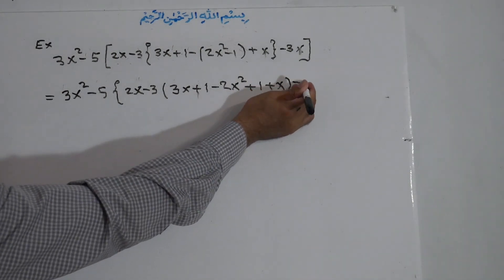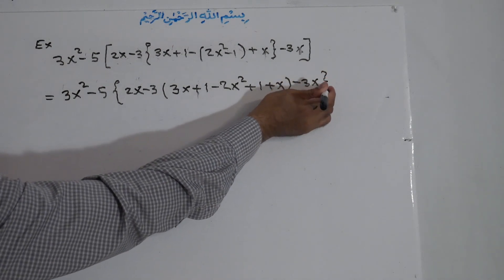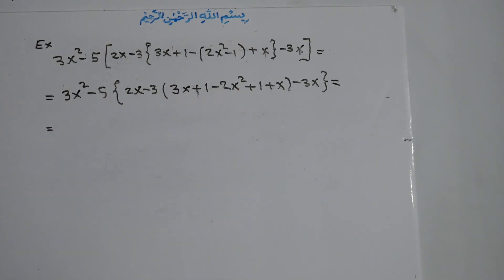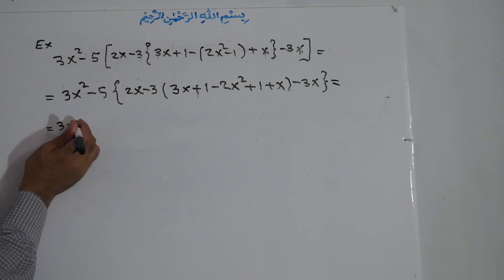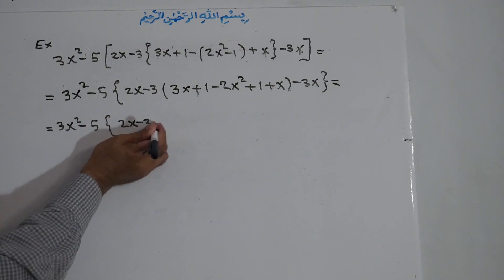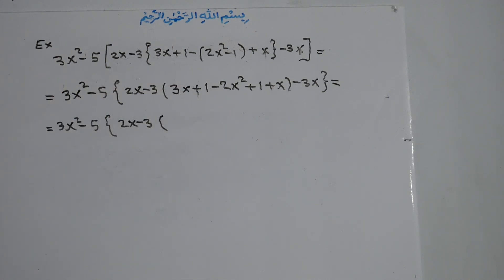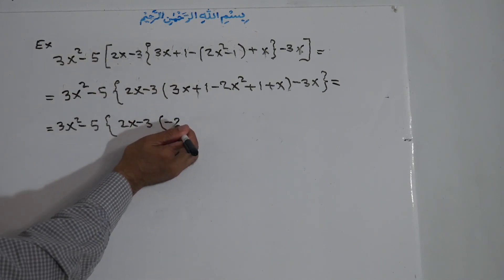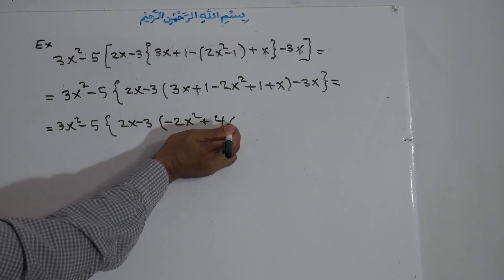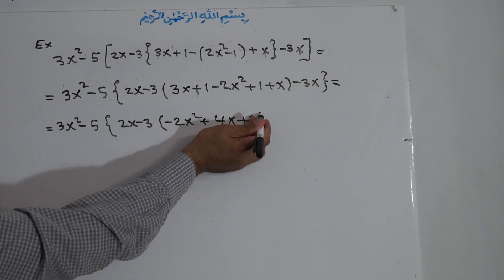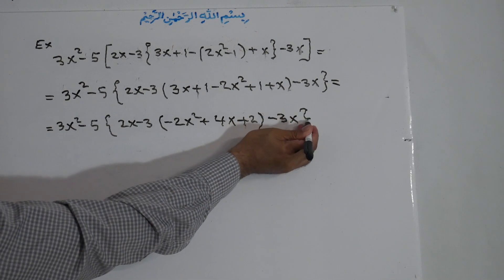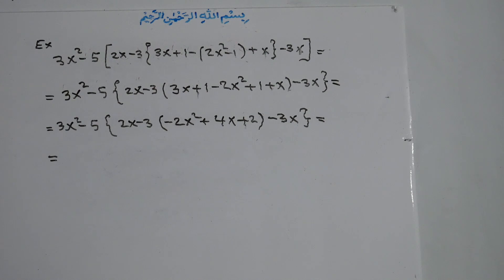We now have: minus 3x, inside a small bracket. We simplify inside this small bracket. Starting from the highest power: negative 2x² — then 3x plus x equals 4x, and 1 plus 1 is 2 — so the small bracket becomes: negative 2x² plus 4x plus 2, minus 3x, inside a medium bracket.